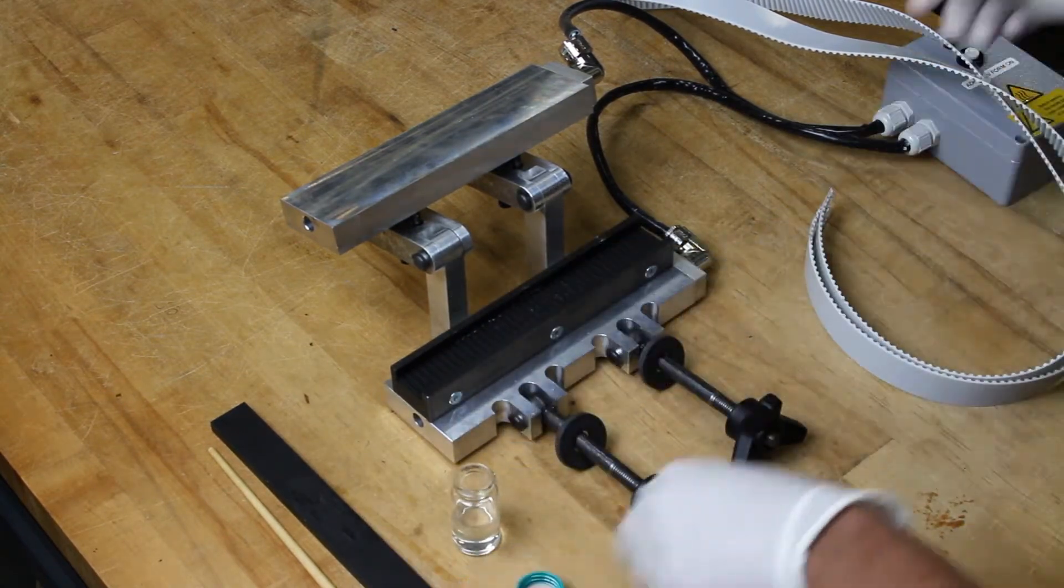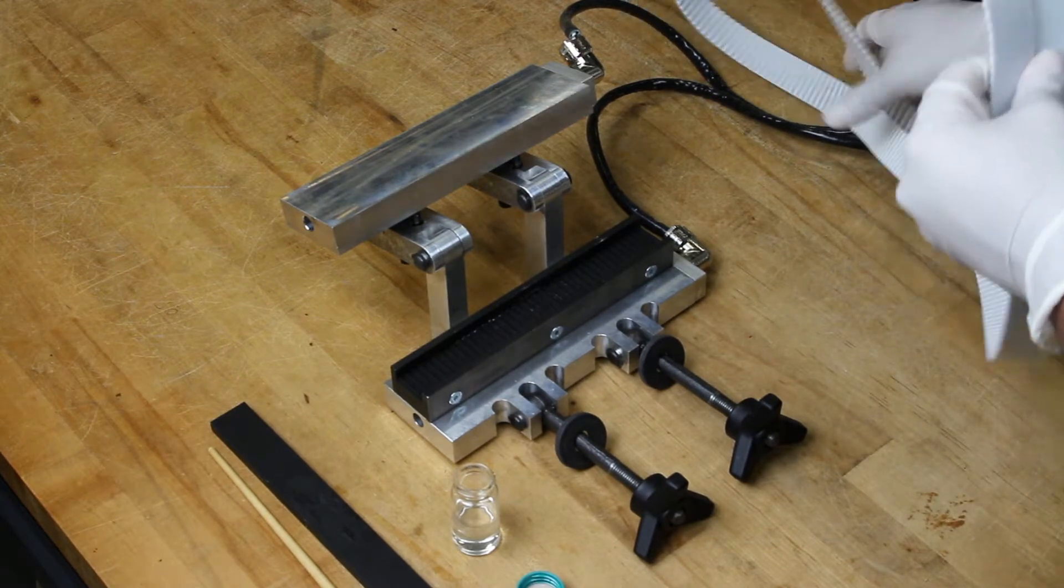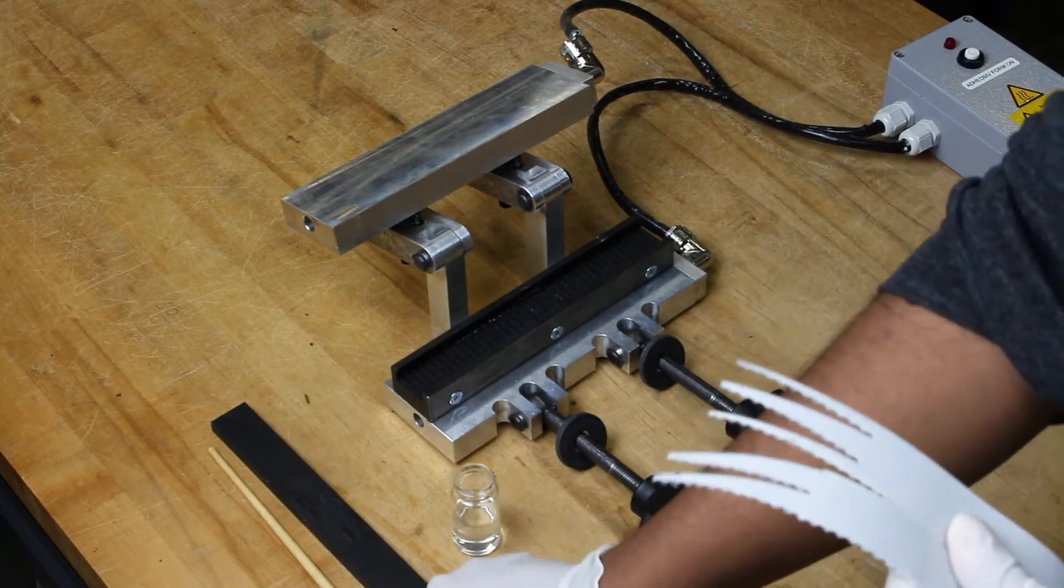Then, prepare the belt by applying perlodone in the weld zone. Be sure to wear gloves while working with perlodone as it is toxic and a skin irritant.